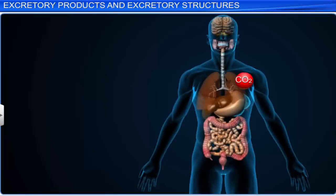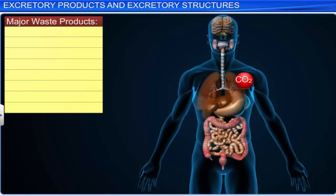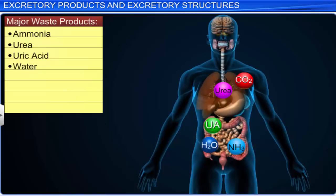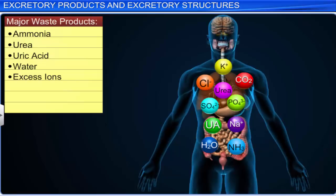Like carbon dioxide, various other waste products such as ammonia, urea, uric acid, water, and excess ions like phosphate, sulfate, sodium, potassium, and chloride are produced in our body as a result of different metabolic activities like ingestion, digestion, and respiration.